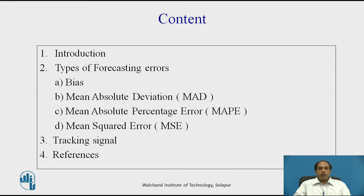We will first have an introduction to errors, then we will study the various types of forecasting errors — mainly bias, mean absolute deviation, mean absolute percentage error, mean square error, and tracking signals.